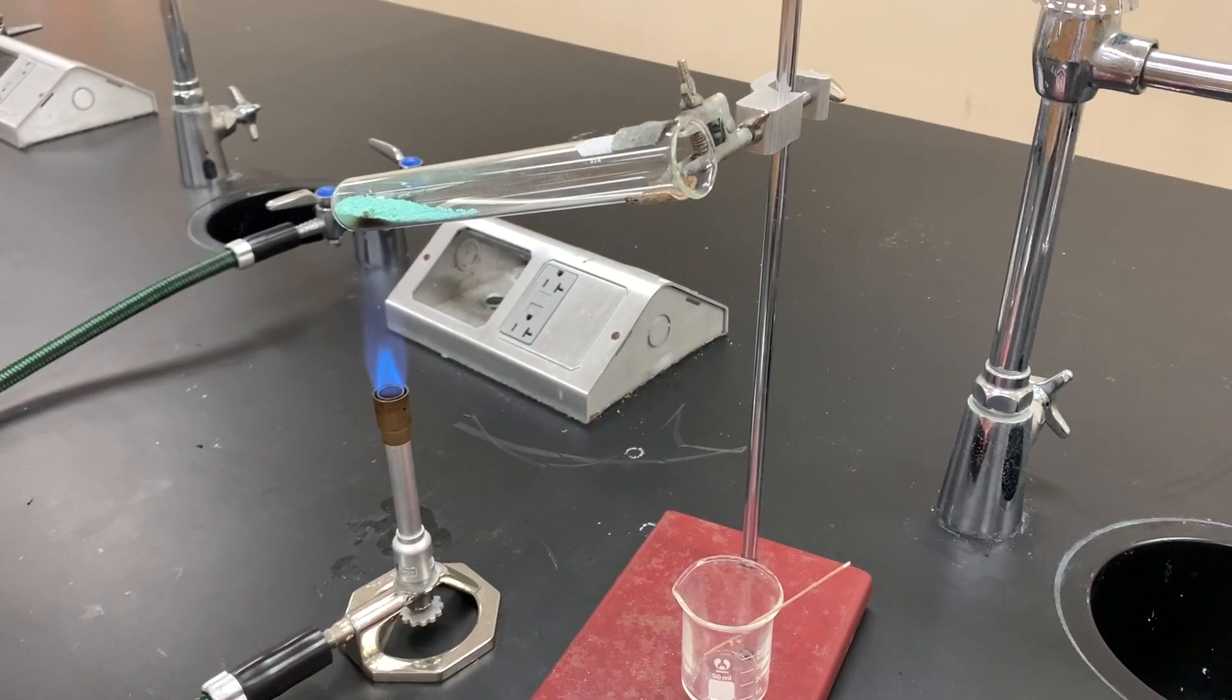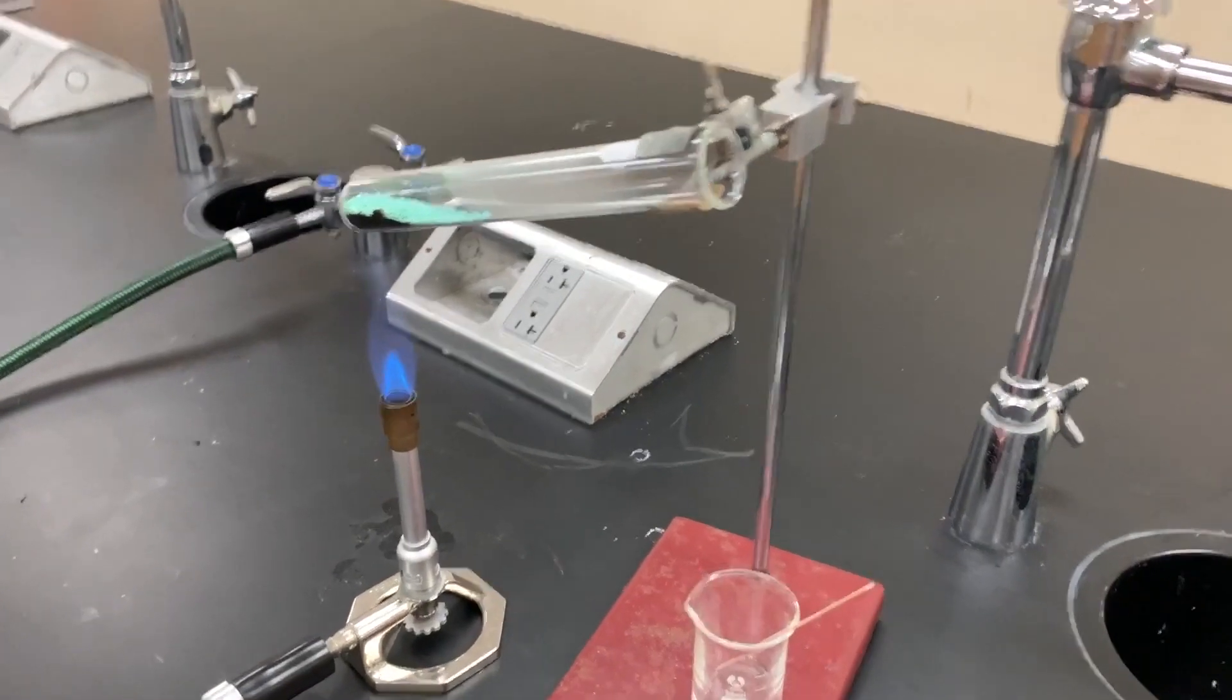First thing you want to do is start looking for signs of a chemical change. If you read the pre-lab, there is a color change that shows copper two oxide is forming. We also want to look for evidence of the other products: carbon dioxide and water. I'm going to zoom in and show you what it looks like.